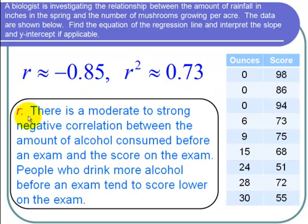We can say, based on R, that there is a moderate to strong negative correlation. It's negative because R is negative. And moderate to strong because 0.85 is not very, very close to one, but pretty close to one. I'm going to use moderate to strong.